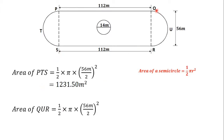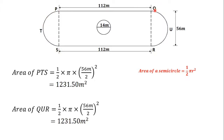Let's find the area of the semicircle KUR. That is also ½ × π × R², and R is 56 meters divided by 2. So we have ½ × π × (56 ÷ 2)², which also gives us 1231.50 meters squared. So we have found the area of the two semicircles PTS and KUR.